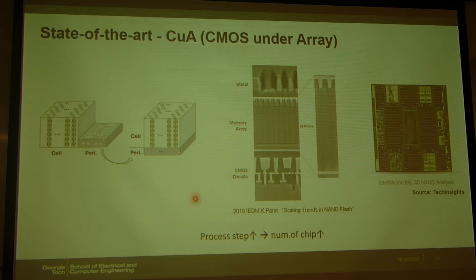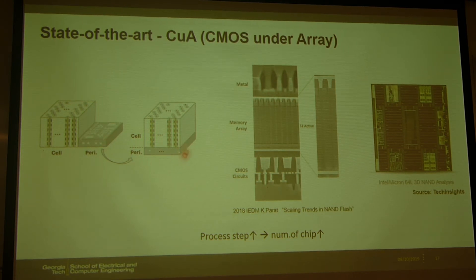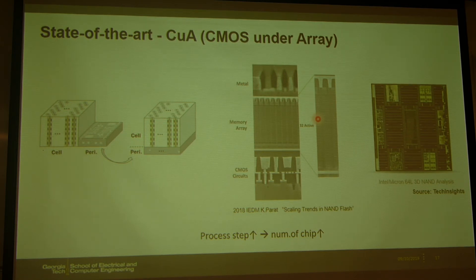This technique is called CUA, that is CMOS Under Array. Most memory cells have this architecture, where the memory cell array and the peripheral circuit is under the memory cell array. This is the cross-sectional view of the CUA structure, and the CMOS circuit is physically under the memory array. This technique increases the process steps and is a very difficult fabrication process, but it can also increase the number of chips per wafer, so we can decrease the cost.